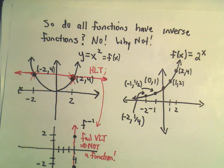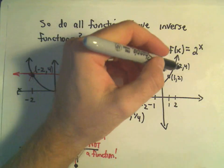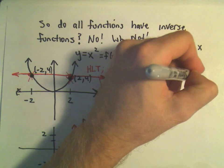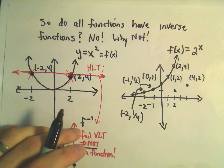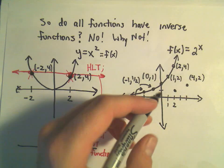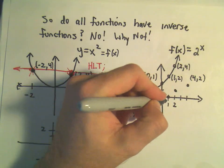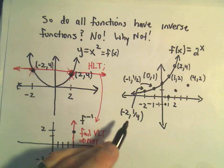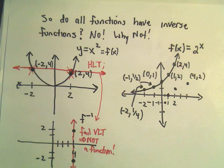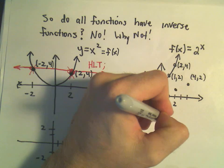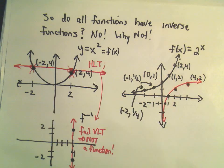Let's use this idea of taking points and flip-flopping them to sketch the inverse function. Since (2, 4) is on the graph, (4, 2) is going to be on the graph of the inverse. Since (1, 2) is on the graph of f, (2, 1) is going to be on the graph of the inverse. Since (0, 1) is on the graph of f, (1, 0) is on the graph of the inverse. Since (negative 1, one half) is on f, (one half, negative 1) is going to be on the inverse. Since (negative 2, one fourth) is on f, (one fourth, negative 2) is going to be on the inverse. And you can actually keep this up and sketch the graph of the inverse by simply plotting points on one and flipping those points.